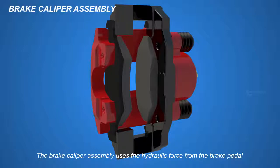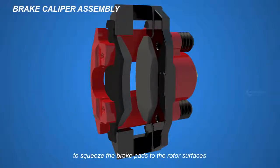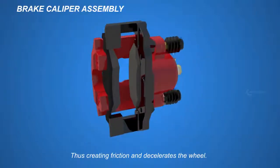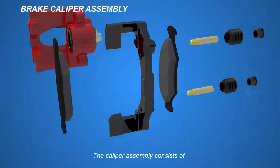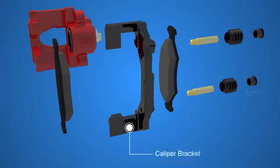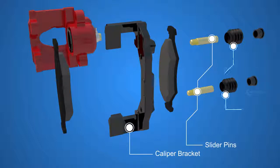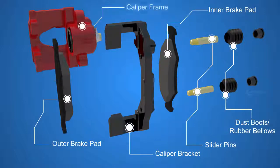The brake caliper assembly uses the hydraulic force from the brake pedal to squeeze the brake pads to the rotor surfaces, thus creating friction and decelerating the wheel. The caliper assembly consists of the caliper bracket, slider pins, dust boots, inner brake pad, outer brake pad, caliper frame, and inside it, the piston.